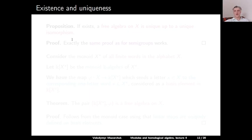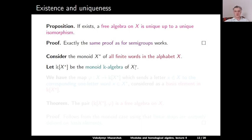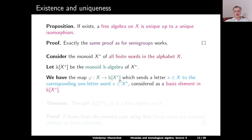Again, a similar commutative diagram as in the previous cases holds. The definition is very similar, just replacing the original structure — semigroup or monoid — by an algebra. We recall that for us an algebra means a unital associative algebra over some field k. Existence and uniqueness: from the definition it's not clear whether free algebras exist. If it exists, a free algebra on X is unique up to a unique isomorphism, proved exactly as for semigroups.